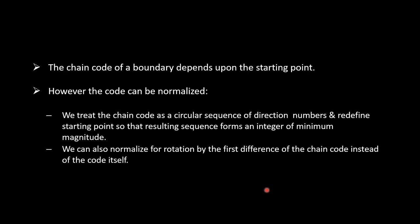The chain code of a boundary depends upon starting point. However, the code can be normalized. We treat the chain code as a circular sequence of direction numbers and redefine the starting point so that the resulting sequence forms an integer of minimum magnitude. We can also normalize for rotation by using the first difference of the chain code instead of the code itself.